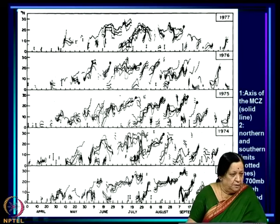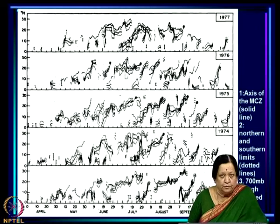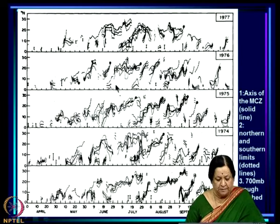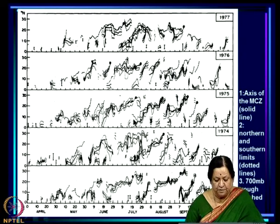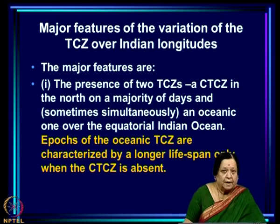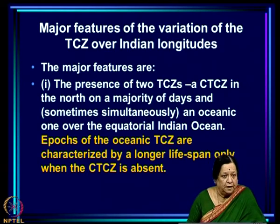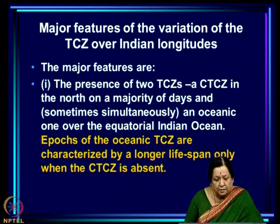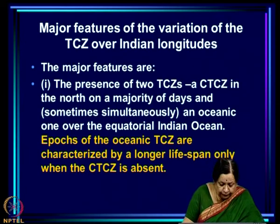From these observations it was deduced — and later correlations will prove — that active spells of the CTCZ or monsoon MCZ are associated with weak or short spells of the oceanic TCZ. Only when the CTCZ disappears does the oceanic TCZ have a longer life and furthermore move northward. This is the typical sequence of events and the complexity of the interaction between the CTCZ and the oceanic TCZ.